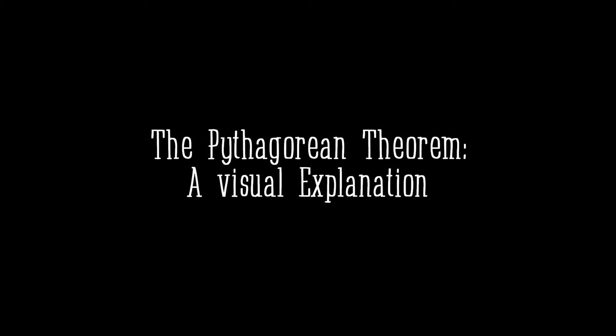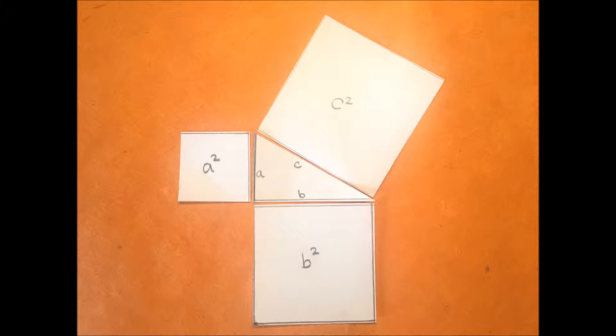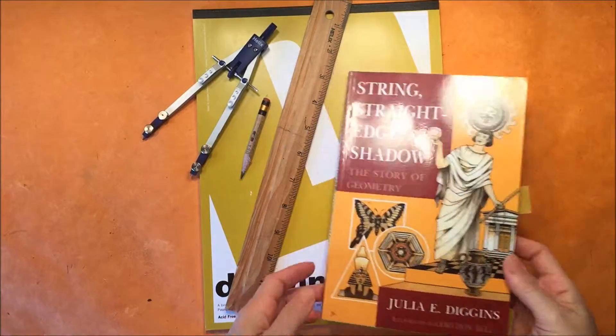Hey there! I have a visual explanation for the Pythagorean Theorem. You're probably familiar with a squared plus b squared equals c squared, and we are going to do a demonstration that Pythagoras himself did in the 6th century BC.